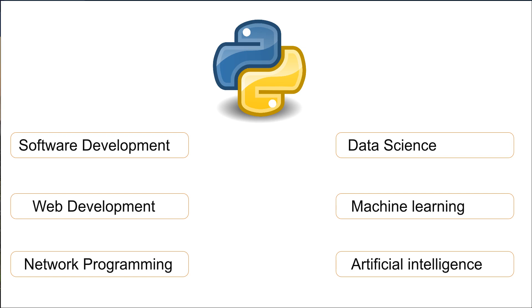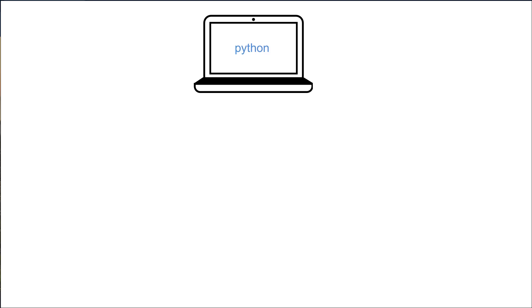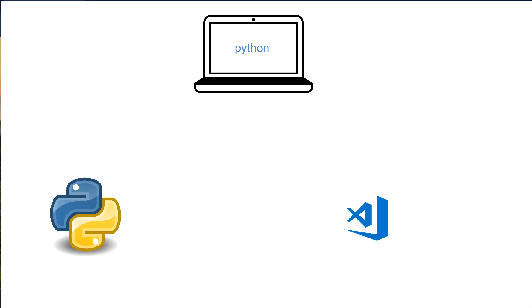What are the requirements to learn Python? There are no requirements — only that you have a system with Python installed. You can use a computer or a laptop, whatever it may be. Make sure that Python is installed in your system, and we also need a code editor where we can write and run our Python code.